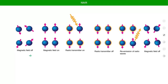We shine all the different radio wave frequencies we can on the sample to get everything into the beta state, and then when they flip back, the light they give off gets measured. Once all the re-emission has happened and everything has flipped back to the alpha state, we can turn off the magnetic field and everything returns to normal. The MRI you get in the medical field is just computer processing of the same information.